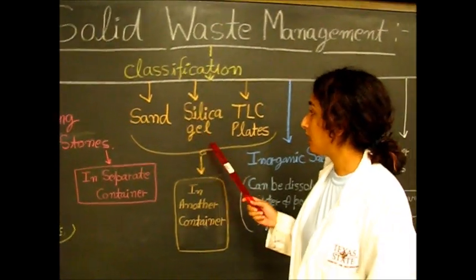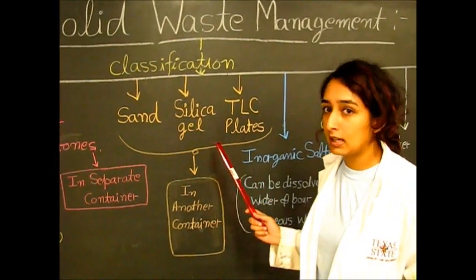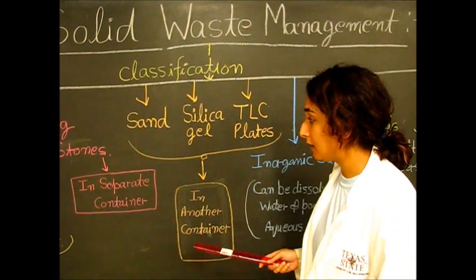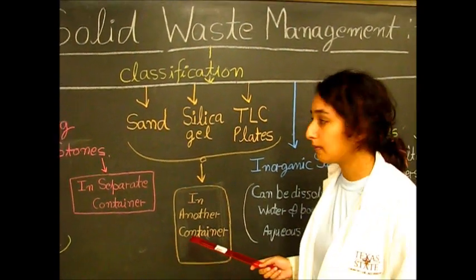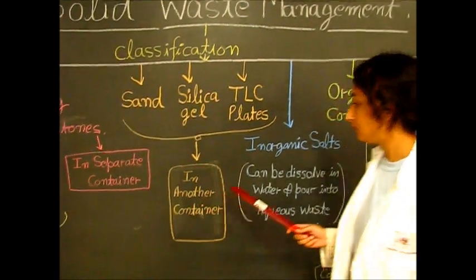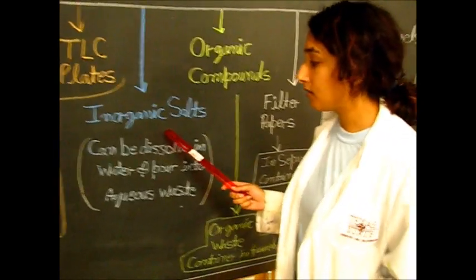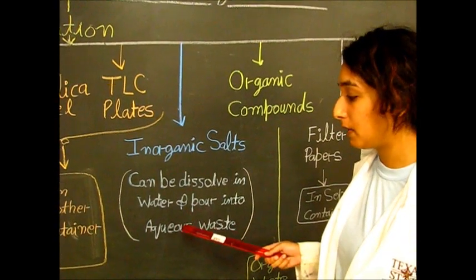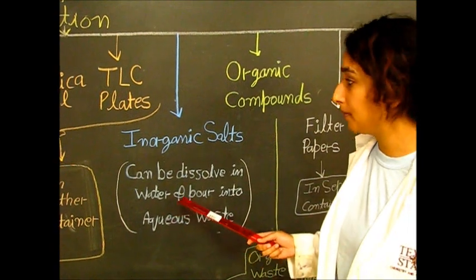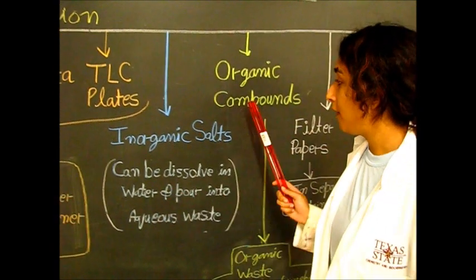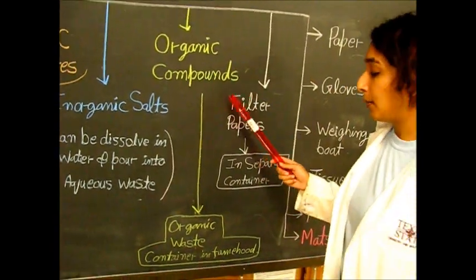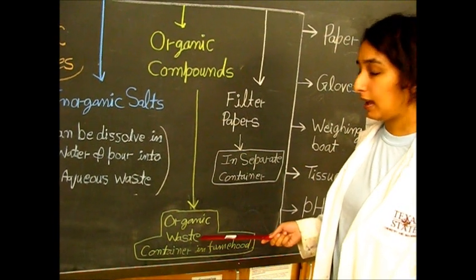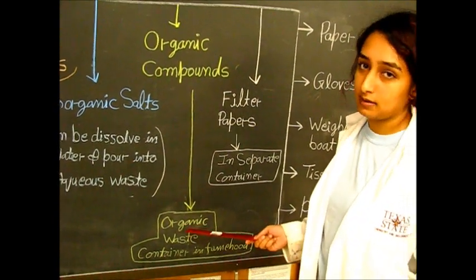For sand, silica gel, and TLC plates commonly used in column chromatography, we place them in another container in the fume hood. For inorganic salts, they can be dissolved in water and poured into the aqueous waste container located in the fume hood. For organic compounds, we place them in the organic waste container in the fume hood. This includes anything washed with acetone.